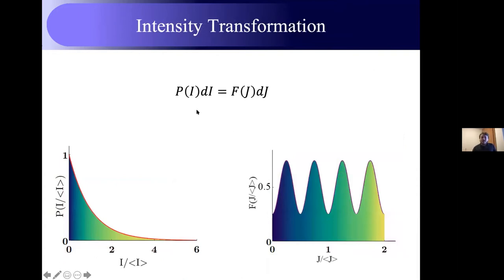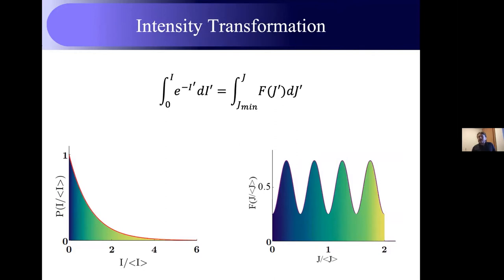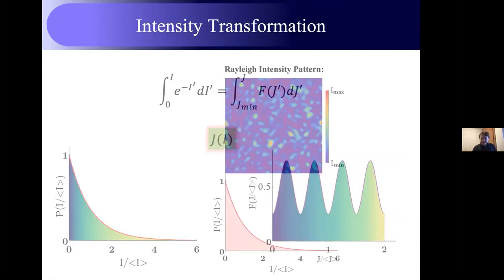The intensity transformation is actually very simple mathematically. Assume you have a probability density function — a negative exponential — and a target probability density function, for example a sine plus a constant. We know that the probabilities are conserved, so both must integrate to exactly one. Using this equality, we can find the intensity transformation function: the mapping between two intensities i and j. By applying this transformation to a Rayleigh speckle pattern, we can go to a customized speckle pattern with customized statistics.